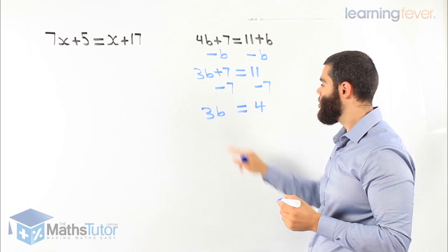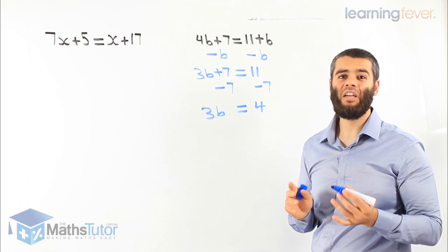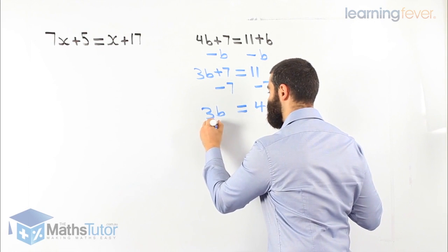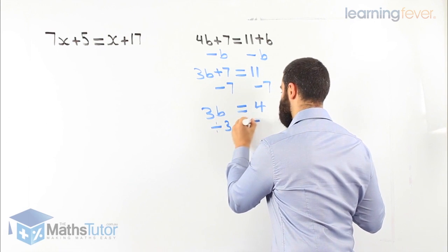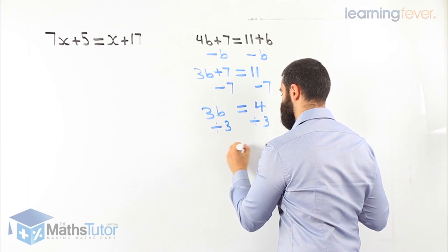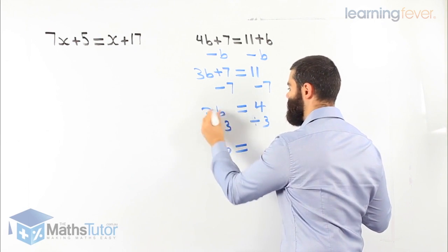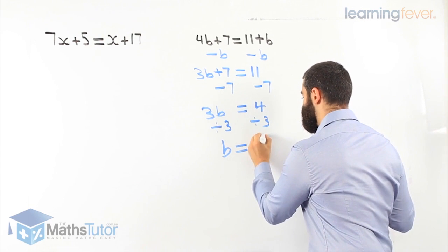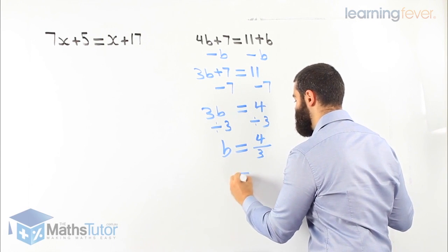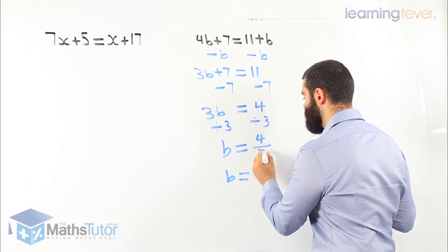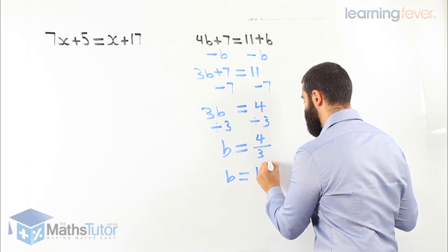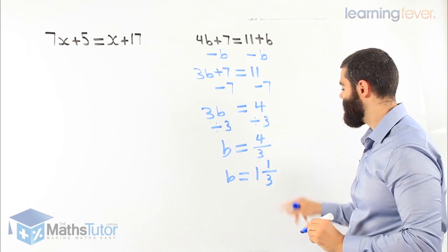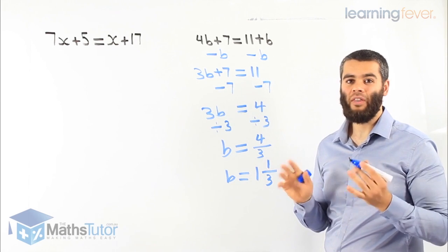3b equals 4. We know 3b is 3 times b. The opposite of times is divide — divide by 3, divide by 3. 3 divided by 3 is 1, so 1b. And 4 over 3 — or as a mixed numeral, how many 3s go into 4? One, with remainder 1. So the answer is 1 and 1 third.